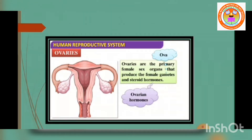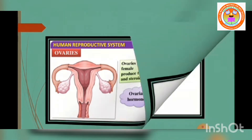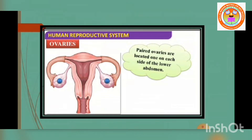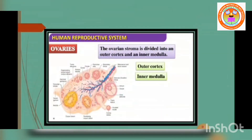Ovaries are the primary female sex organs that produce the female gamete, ovum. The ovaries are located one on each side of the lower abdomen. The ovary is an elliptical structure about 2 to 4 cm long.